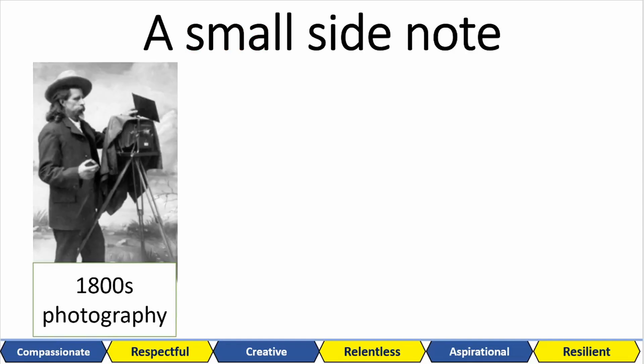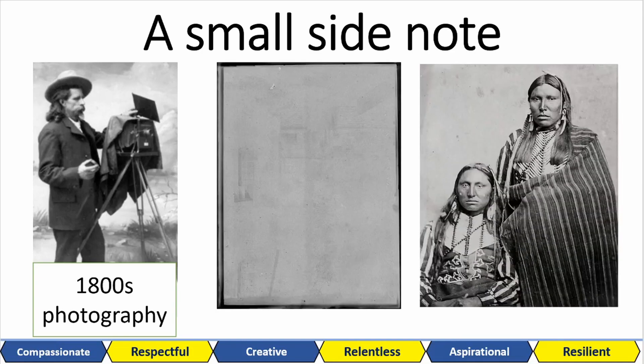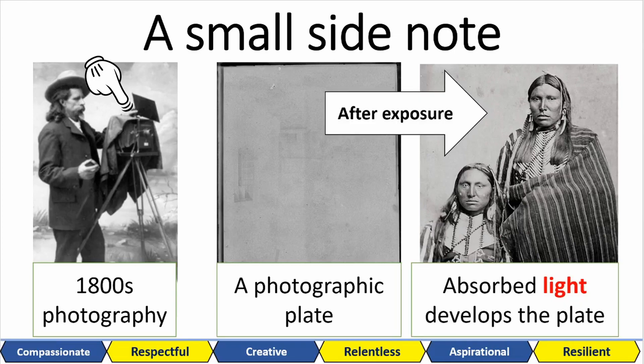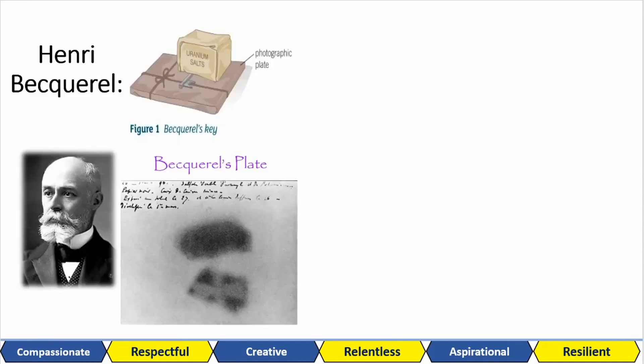A quick side note to understand the discovery of radiation now. Way back when, this was how you had to take pictures. You had this photographic plate that goes inside this device, and when light is absorbed by the plate, an image is developed. Now we have Henry Becquerel. He had a photographic plate that was covered, so it was not exposed to light, and he left a few things on top. The bottom plate shows what the plate looks like when he actually checked them.